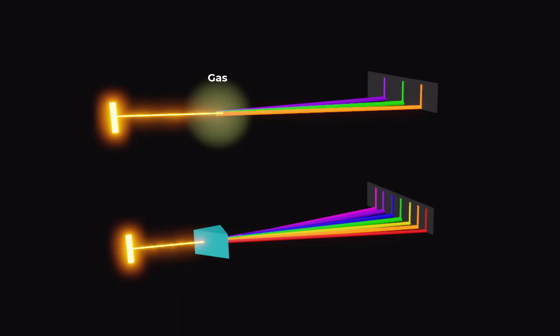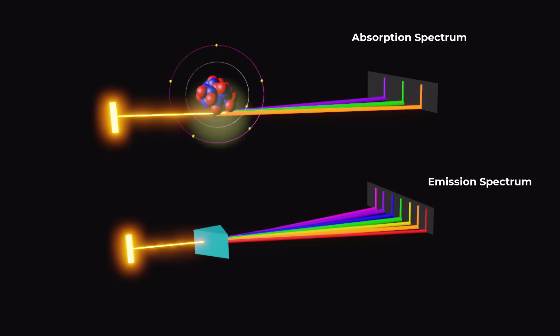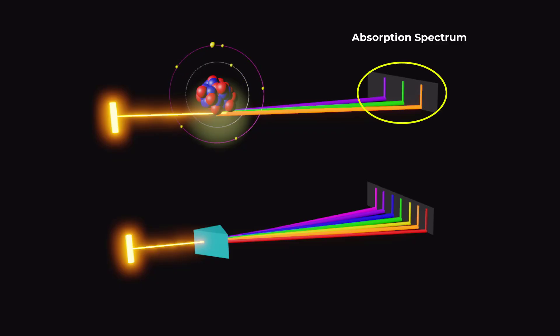The line spectra are further subdivided into two types: absorption spectrum and emission spectrum. When an electron jumps from a low energy level to a high one, it absorbs energy, and the set of wavelengths of light absorbed by an object is called its absorption spectrum.